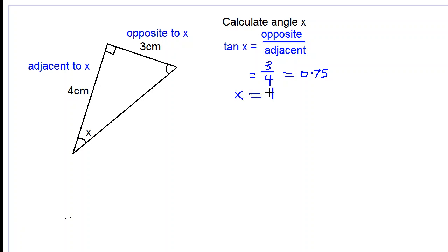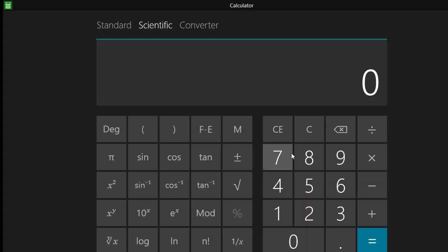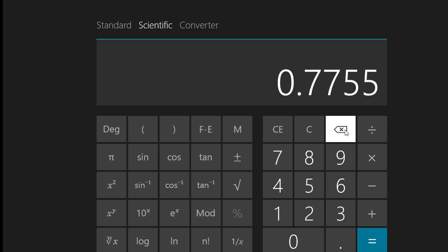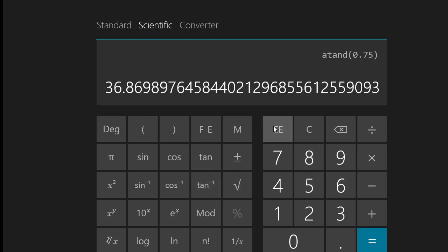So X is equal to tan inverse of 0.75. Okay, we find the tan inverse of 0.75 and we use our calculators for that. So tan inverse of 0.75 is 36.869 and so on degrees. So we round it off and we write our answer to one decimal place. So 6 is 5 or more, so we add 1 to the 8 and we get 36.9 degrees.